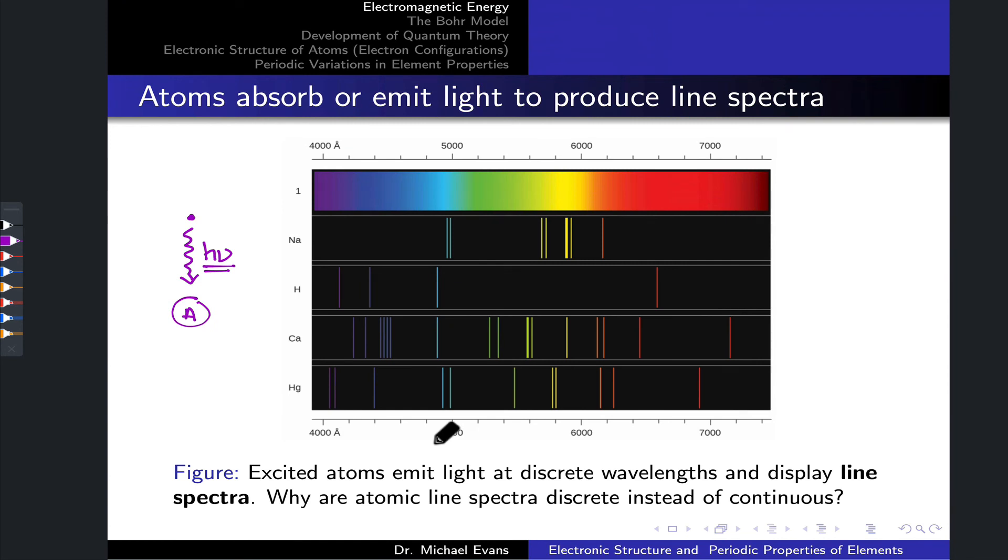One more phenomenon that suggests light has particulate nature or particle-like aspects has to do with the light absorbed or emitted by atoms or elements. What we're looking at at the middle of this slide is the spectrum of a series of elements: sodium, hydrogen, calcium, and mercury. A spectrum is just the wavelength dependence of light emitted or absorbed by the elements. The x-axis is a wavelength scale in angstroms, which is 0.1 nanometers or 10 to the negative 10 meters. Everywhere where we see a vertical line, there is light absorbed or emitted at that wavelength.